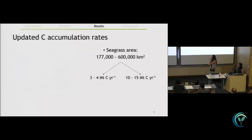Also, because if we upscale this estimate to the global seagrass area, we will be seeing that globally seagrass store between 3 and 15 million tons of carbon each year.